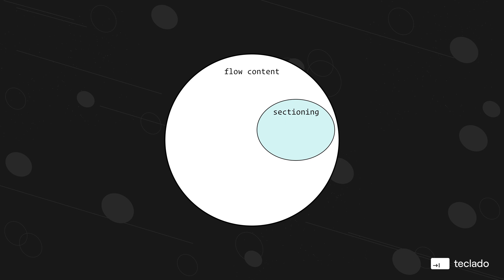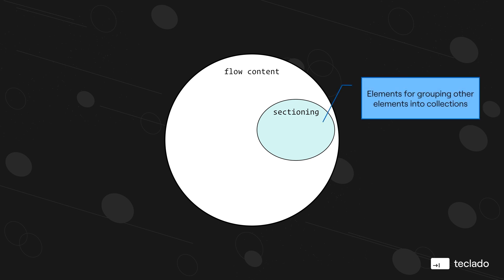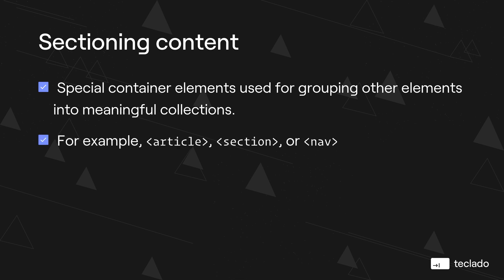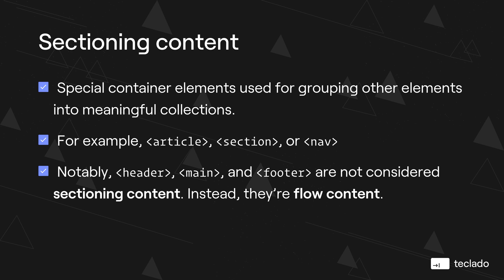Inside flow content we have other important subcategories. For example, the sectioning category of elements. Sectioning elements are special container elements that are used for grouping other elements into meaningful collections — for example, the article element, the section element, or the nav element. Notably, the header, main, and footer elements are not considered sectioning elements; they are flow elements. We're going to talk about article, section, and nav in a lot of detail later on, as they are some of the most used elements in HTML, normally used to separate pages into different parts.